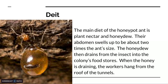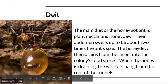Diet: the main diet of the honeypot ant is plant nectar and honeydew. Their abdomen swells to be about two times the size of the ant. The honeydew then drains from the insects into the colony's food stores, with workers hanging from the roof of the tunnels.